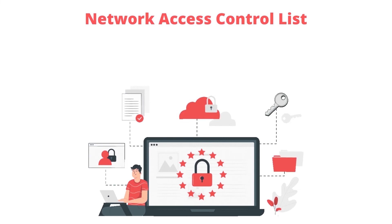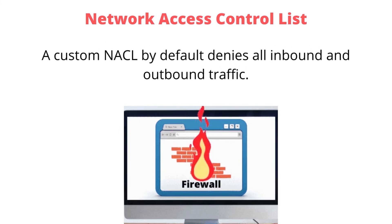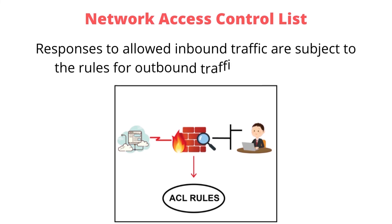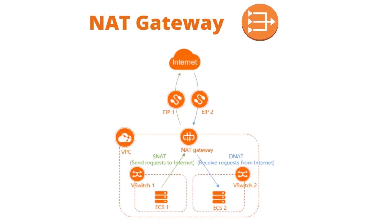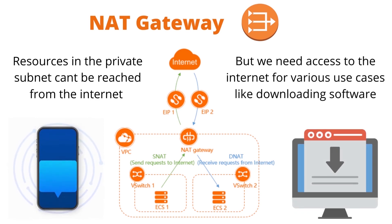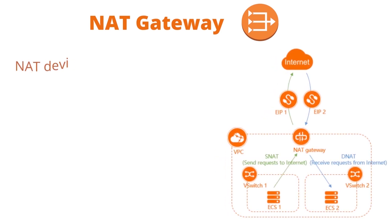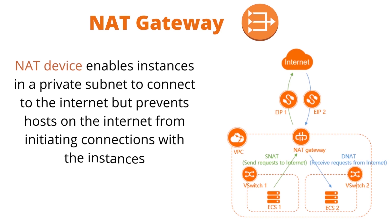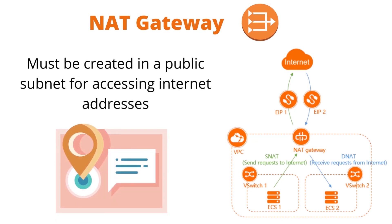Network Access Control List: NACLs act as a firewall at the subnet level. A custom NACL by default denies all inbound and outbound traffic. Network ACLs are stateless, meaning responses to allowed inbound traffic are subject to the rules for outbound traffic and vice versa. Each subnet can only be attached to one NACL. Resources in the private subnet can't be reached from or reach the internet, but for use cases like downloading software, we use NAT. A NAT device enables instances in a private subnet to connect to the internet but prevents hosts on the internet from initiating connections. NAT performs address translation from private IP to its own public IP, and must be created in a public subnet.